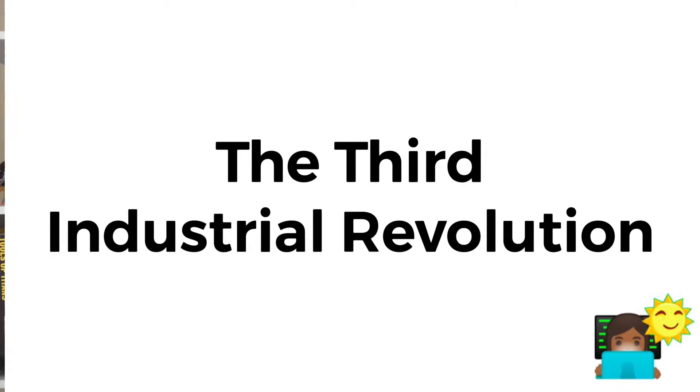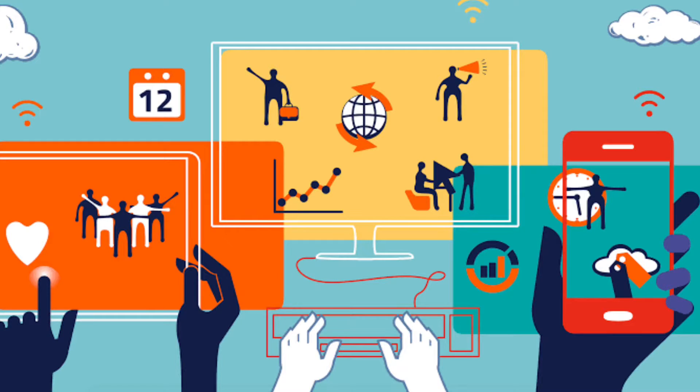The third industrial revolution, also known as the digital age, started in the 1950s with personal computers and the internet. Technologies that were previously analogue started becoming more digital, as we saw digital phones, digital televisions, tablets, smartphones, and of course robots.